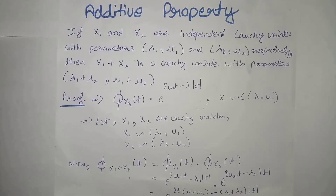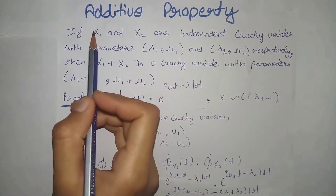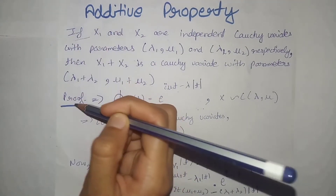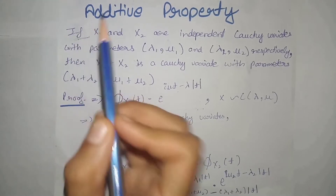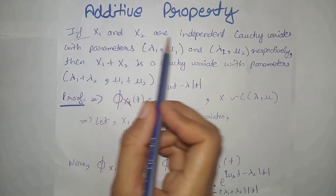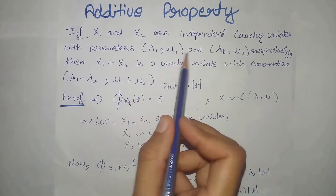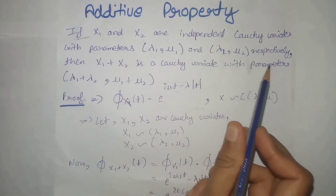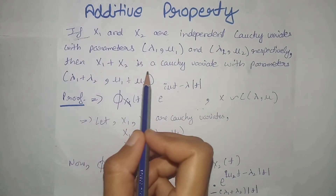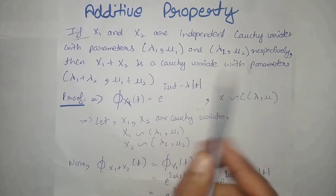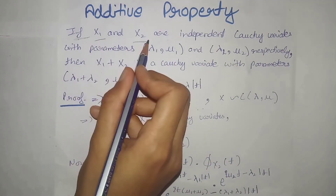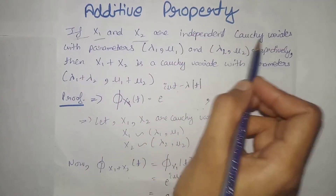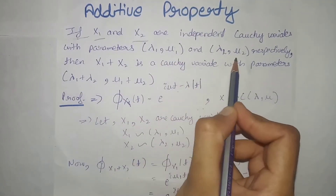Additive property of Cauchy distribution: first we will see its statement, then we will prove it. If x1 and x2 are independent Cauchy variates with parameters (lambda1, mu1) and (lambda2, mu2) respectively, then x1 plus x2 is a Cauchy variate with parameters (lambda1 + lambda2, mu1 + mu2).